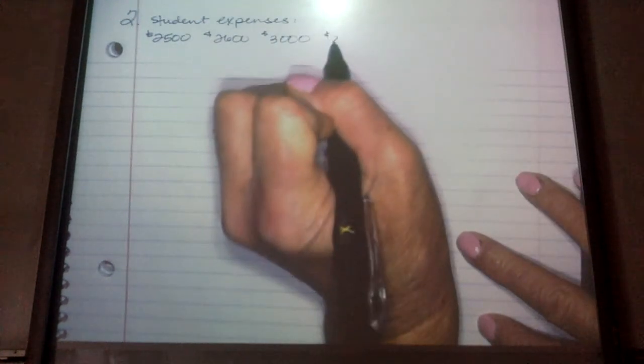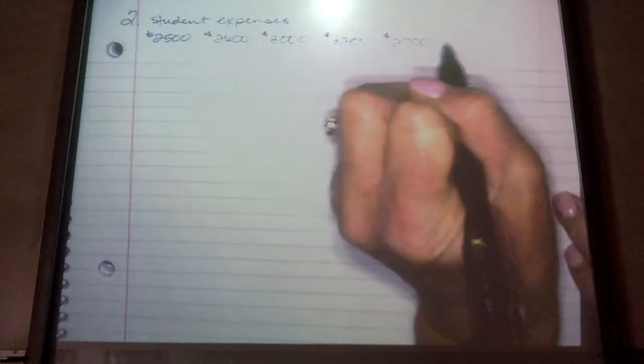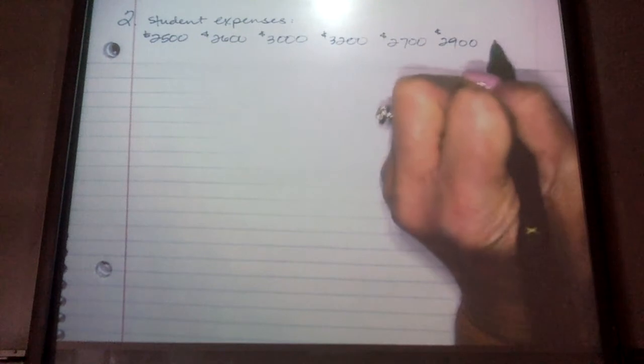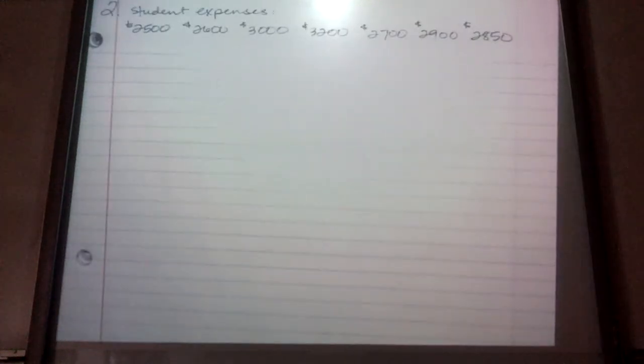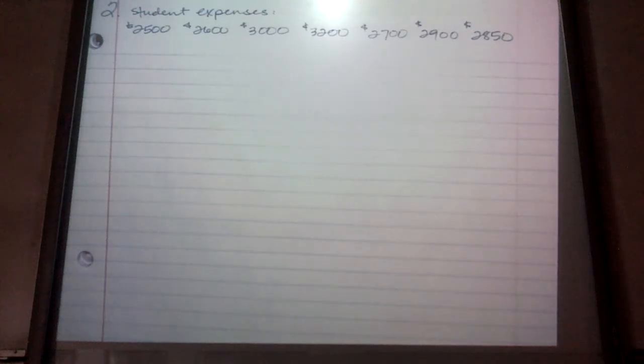All right, so the next example I'm going to do with you is number two. So I'm going to give you student expenses. So, and these are, like, per month. So I have 2,500, 2,600, 3,000, 3,200, 2,700, 2,900, and 2,850. So we interviewed, let's say they interviewed students. I'm not going to write this big, long word problem. And these were their monthly expenses. I'm going to put that. These are monthly.